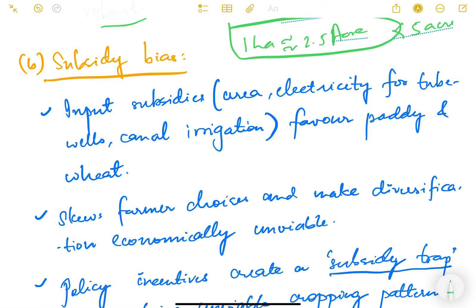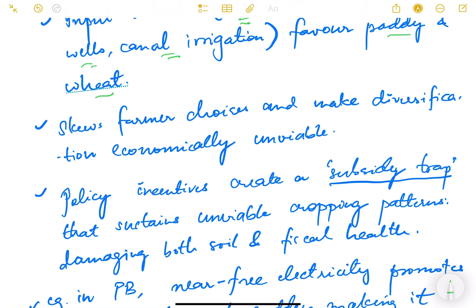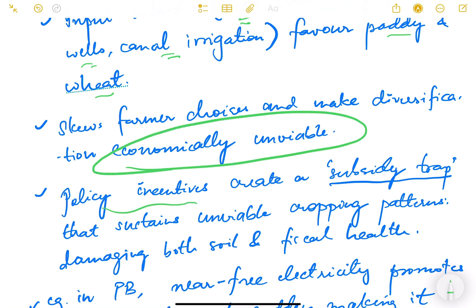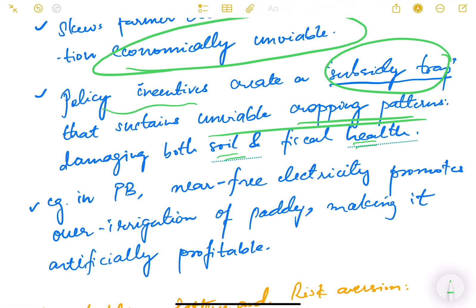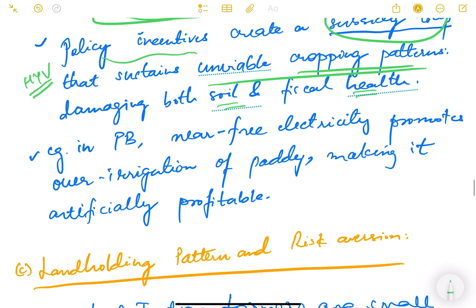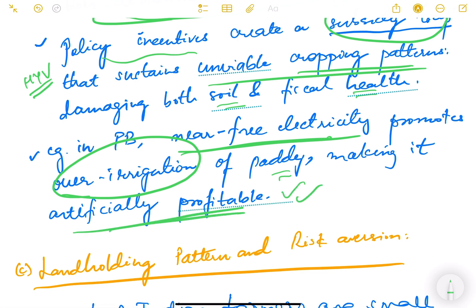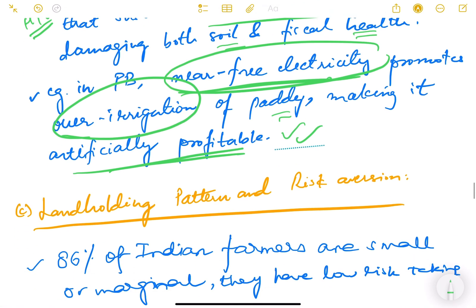The next constraint is subsidy bias. Input subsidies like urea subsidy, electricity for tube wells, and canal irrigation favor paddy and wheat. This skews farmers' choices and makes diversification economically unviable. Policy incentives create a subsidy trap that sustains unviable cropping patterns, damaging both soil and fiscal health. For example, in Punjab there is near-free electricity which promotes over-irrigation for paddy, making it artificially profitable. If electricity were not subsidized, paddy would not have been so profitable.